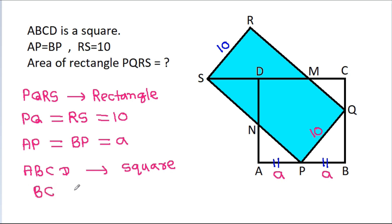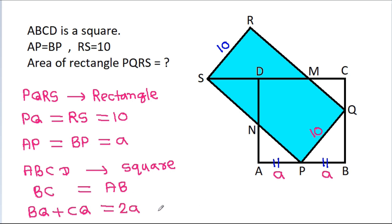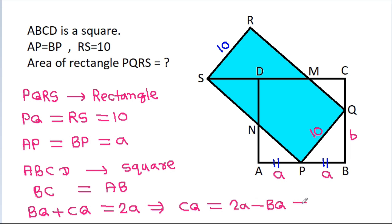So BC will be equal to AB. And BC is BQ plus CQ, that is equal to AB, which is A plus A, that will be 2A. Suppose BQ is B, then CQ will be equal to 2A minus BQ, that will be equal to 2A minus B.